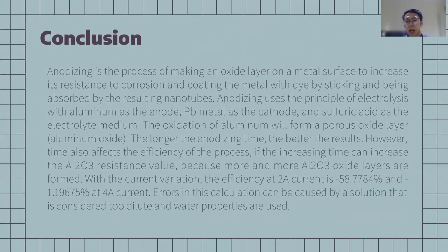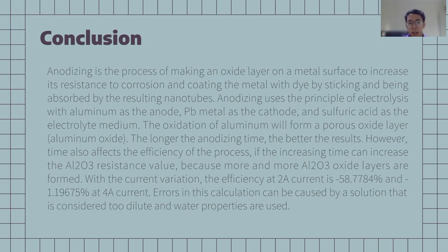For the conclusion: anodizing is the process of making an oxide layer on a metal surface to increase its resistance to corrosion, and coating the metal with dye by sticking and being absorbed by the resulting nanotubes. Anodizing uses the principle of electrolysis with aluminum as the anode, Pb metal as the cathode, and sulfuric acid as the electrolyte medium. The oxidation of aluminum forms a porous oxide layer of aluminum oxide (Al₂O₃). The longer the anodizing time, the better the results, but there is an optimum time, and increasing time also increases the Al₂O₃ resistance value as more aluminum oxide layers are formed.